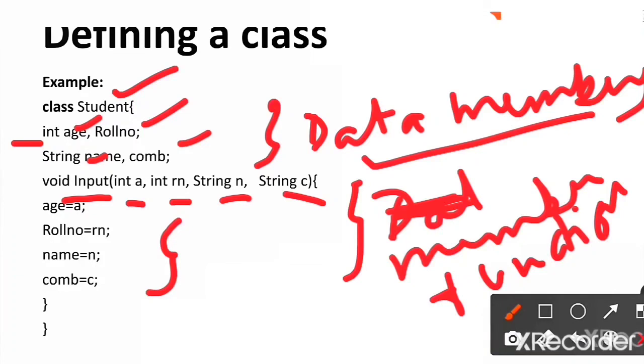So, this is how we bind the data members and member function into a single unit called class. In general, the body of the class defines the structure of an object called student.